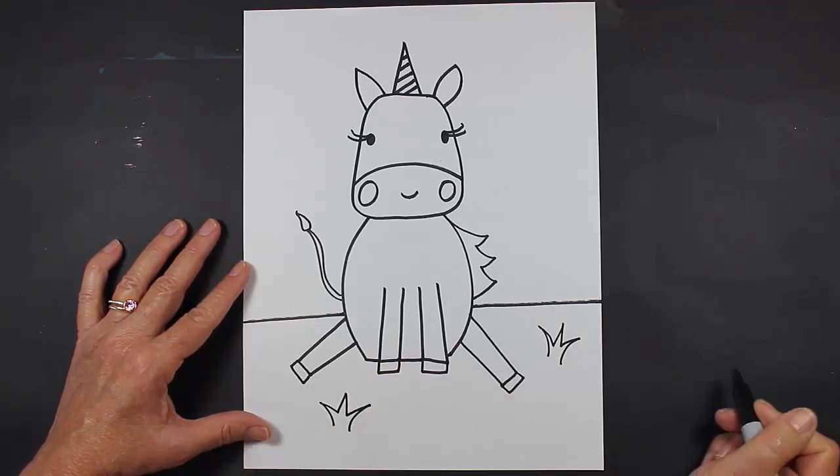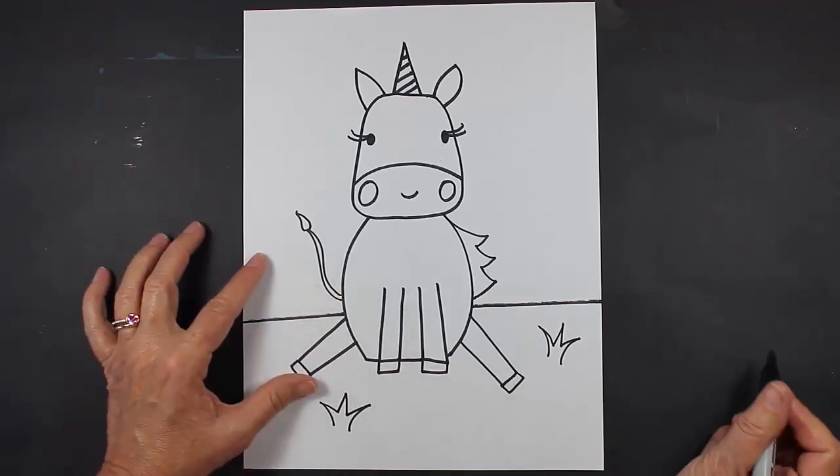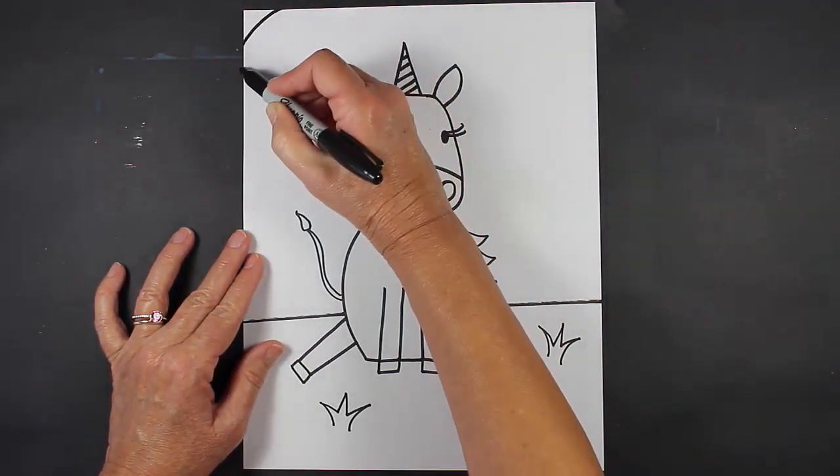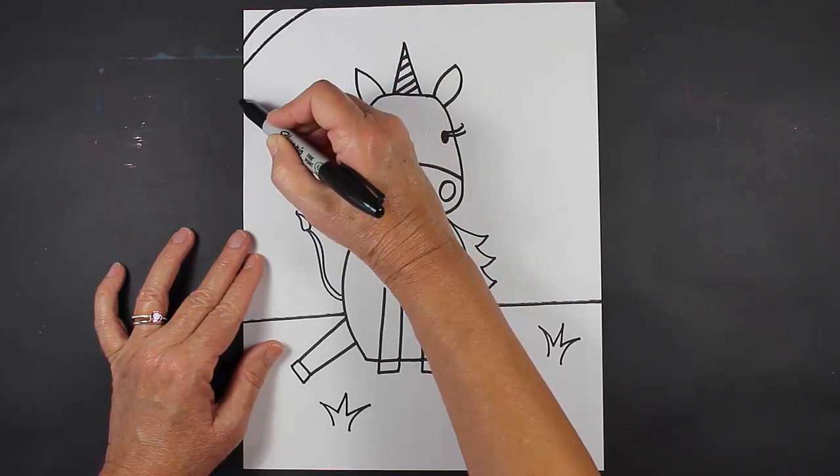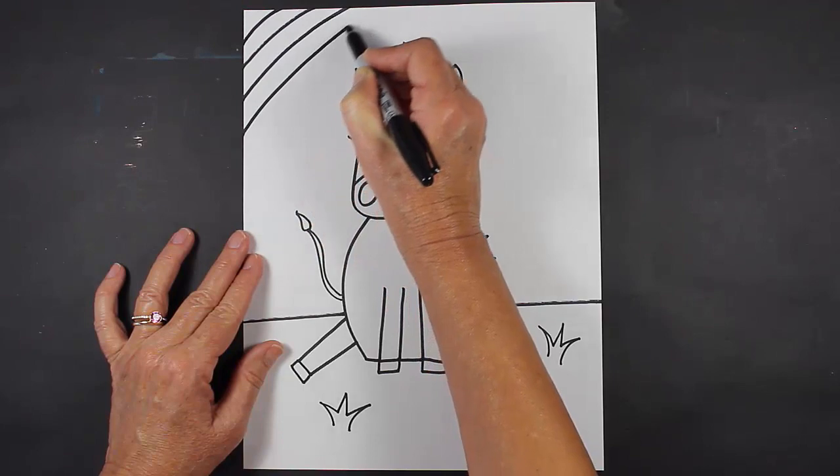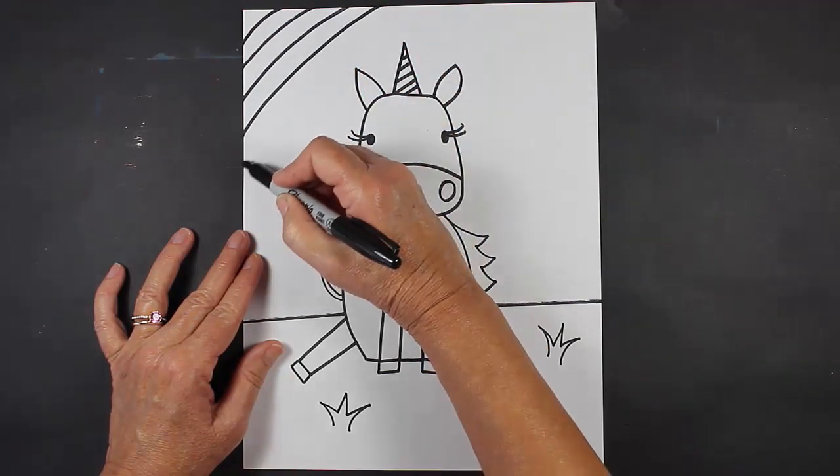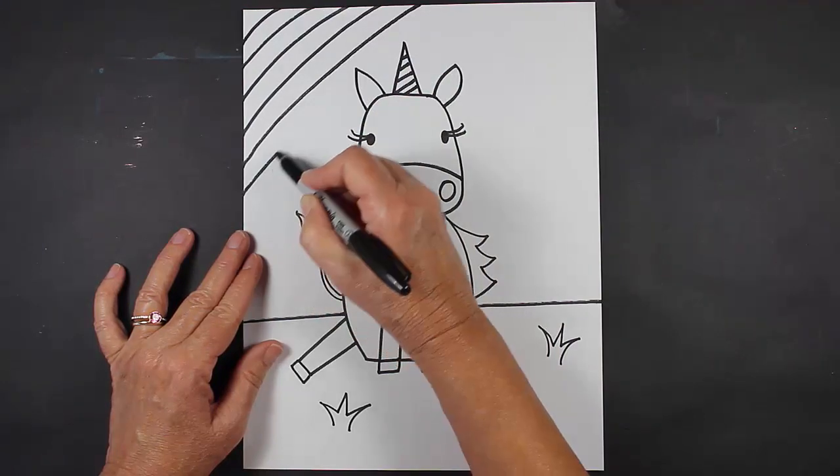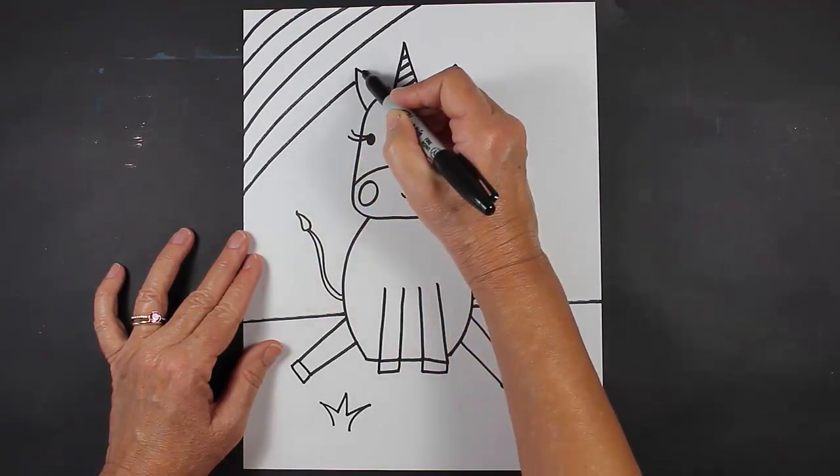And I think in the background I'm going to have a rainbow, so I'm going to make some curved lines just on the side corner of my paper, just like that. Do you see what I'm doing? I'm going slowly and carefully so I do my best work.